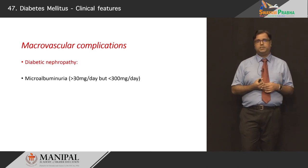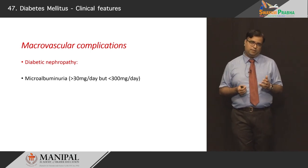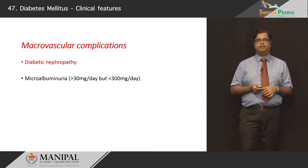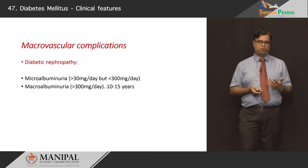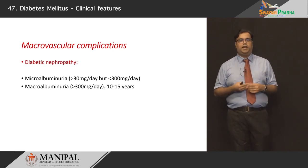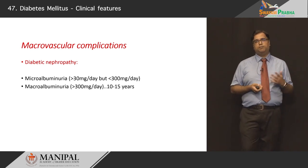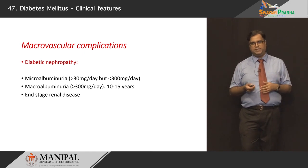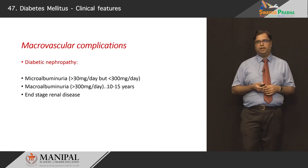Diabetic nephropathy is characterized by the starting event of microalbuminuria — quantified as more than 30 mg but less than 300 mg of albumin per day. This is an independent risk factor for further complications such as stroke. Over 10 to 15 years, microalbuminuria becomes macroalbuminuria — more than 300 mg per day — with overt symptoms. Eventually, over 20 to 25 years, diabetics undergo ESRD or CKD stage 5 — end-stage renal disease — where the kidney is no longer viable and the patient may require hemodialysis or a transplant.